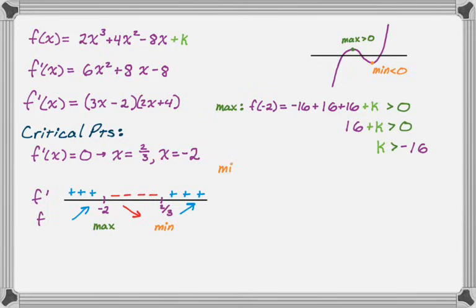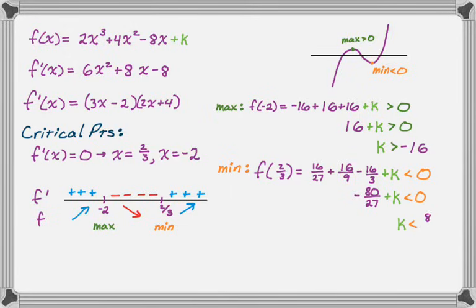And now if we look at the minimum, so the minimum occurs at x = 2/3, so the y value is going to be f(2/3). And so that, if we substitute in, we get 16/27, and then plus 16/9, and then minus 16/3, and then there's just a plus k. And we need to force this to be less than zero. So this, if we clean it up, we get -80/27 + k < 0, which means that k needs to be less than 80/27. So as long as k is less than 80/27, the minimum is going to be negative. And that's what we need to happen. Or below zero, the minimum will be below the x-axis.